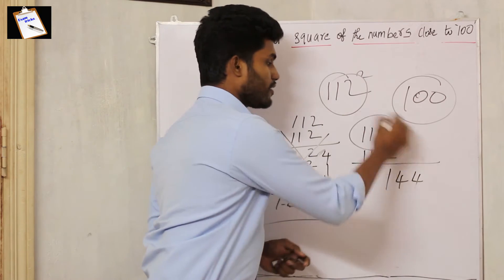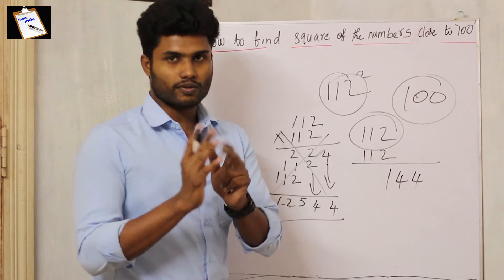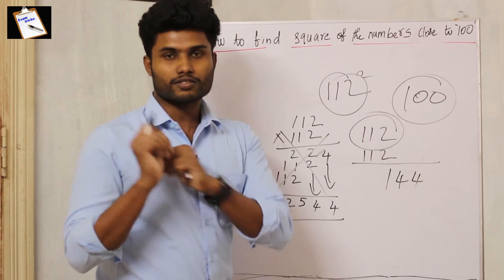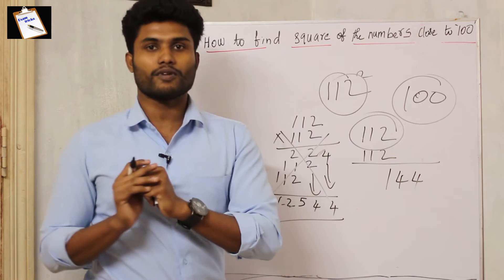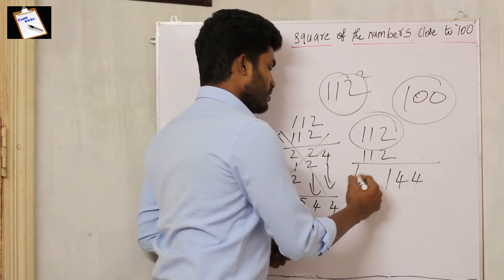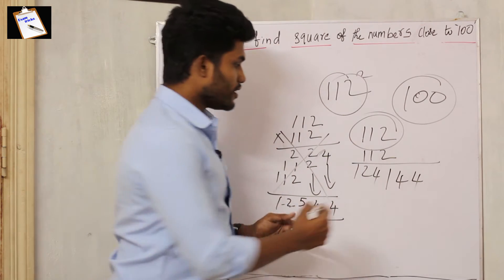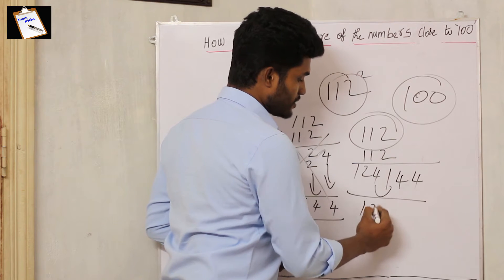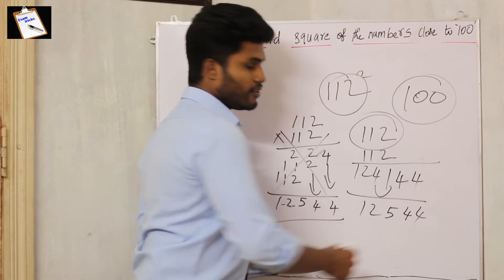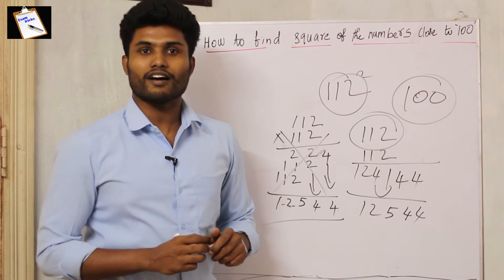Then add 12 to this number. The answer is 12544. Now suppose 113 square.